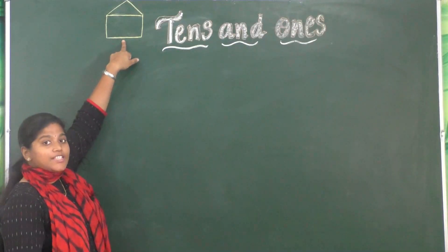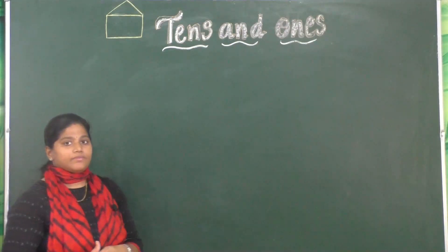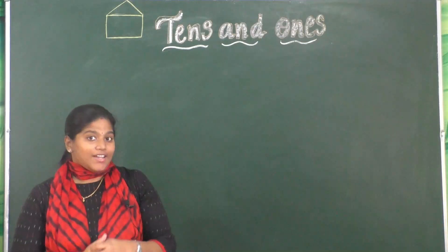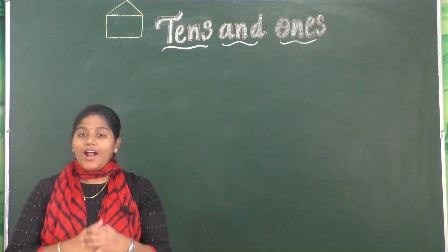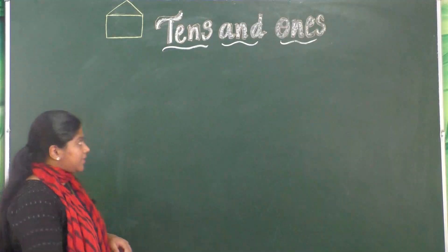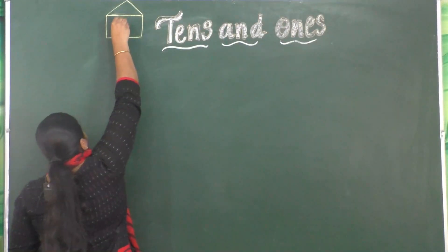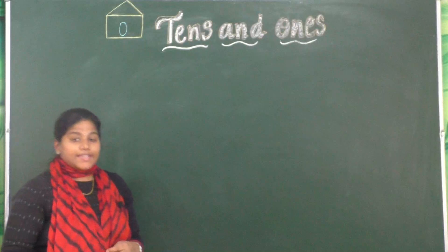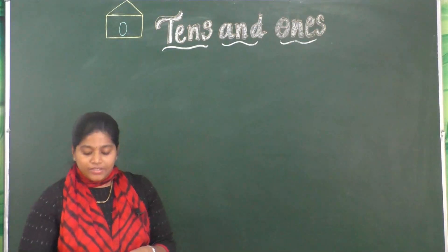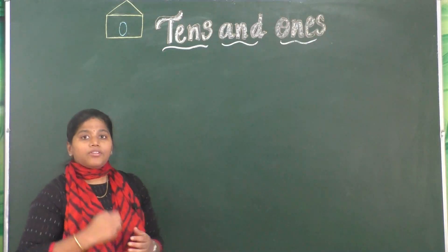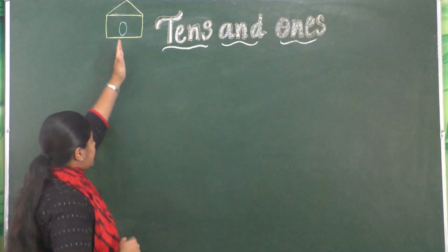I have a small house and we have to name this house. The name of the house is ones. I am going to write O — O represents ones, that is the name of the house. Now I am going to write the numbers from 1 to 9 below this house.